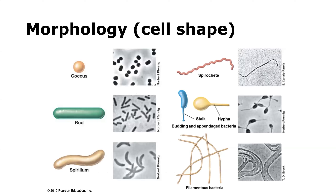We describe microorganisms based on their morphology, particularly for bacteria. Bacteria come in a wide variety of shapes and sizes, including the coccus shape, which is circular and spherical, rod-shaped, spiral-shaped, and other shapes. One of the more interesting ones is filamentous bacteria, which you tend to find in activated sludge systems.